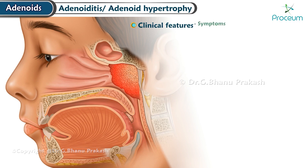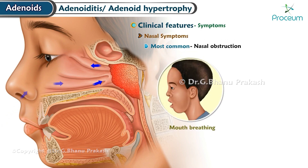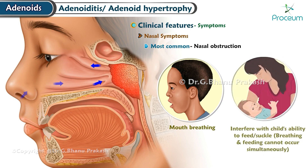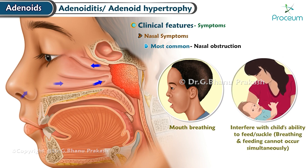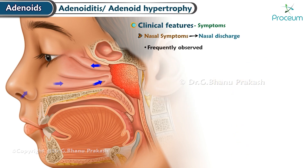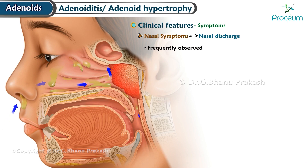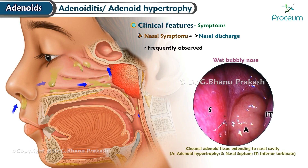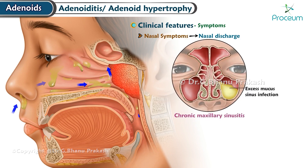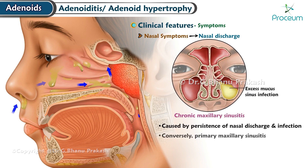Clinical features — nasal symptoms: the most common symptom is nasal obstruction leading to mouth breathing. This obstruction can interfere with the child's ability to feed or suckle, as breathing and feeding cannot occur simultaneously; consequently, children with enlarged adenoids may experience failure to thrive. Nasal discharge is frequently observed, attributed to choanal obstruction — which hinders normal drainage of nasal secretions into the nasopharynx — and associated chronic rhinitis, often resulting in a wet, bubbly nose. Adenoid enlargement is commonly associated with chronic maxillary sinusitis.